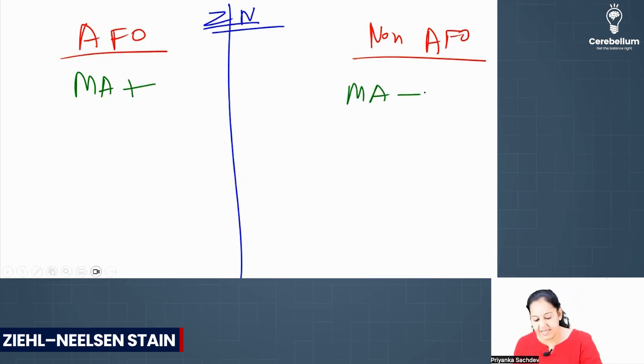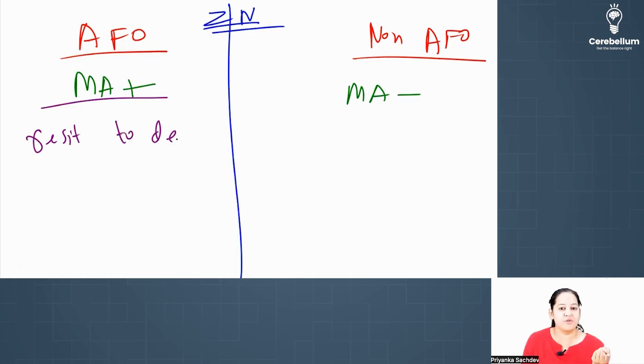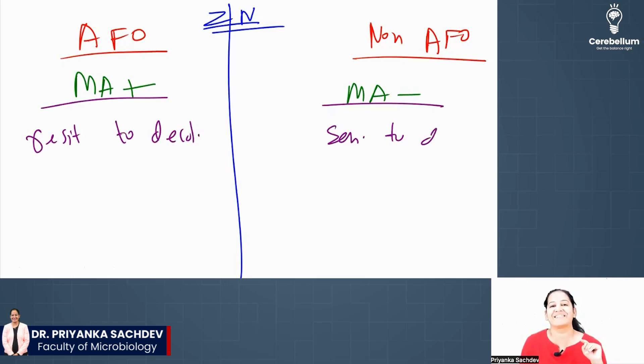Since they have mycolic acid in their cell wall, they are resistant to decolorizer, resistant to H2SO4. And since they don't have mycolic acid, they are sensitive to decolorizer.